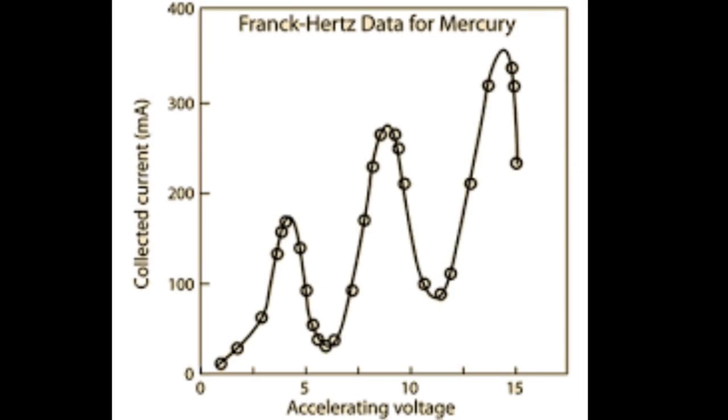The data from the experiment shows that when the accelerating voltage reaches 4.9 volts, the current sharply drops indicating the sharp onset of a new phenomenon which takes enough energy away from the electrons that they cannot reach the collector.